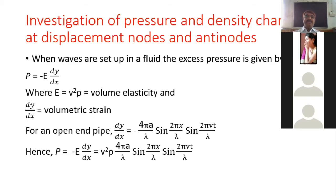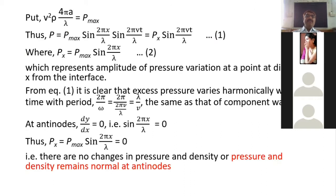The term v²ρ · 4πa/λ is independent of x and t, so we call it p_max — the amplitude of the change in pressure. We can then write the excess pressure as p = p_max · sin(2πx/λ) · sin(2πvt/λ), where p_max is the constant amplitude.